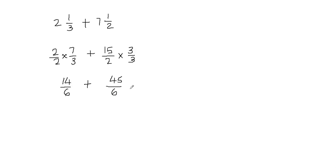Now I have the same denominators, so I can go ahead and add the fractions. When you add fractions, you never add the denominators — the denominator stays 6. We just add the numerators: 14 plus 45 gives me 59. So I got 59 over 6.